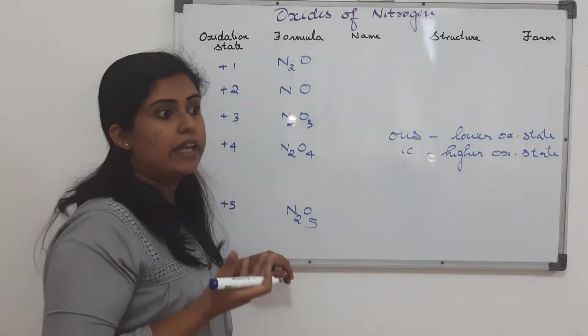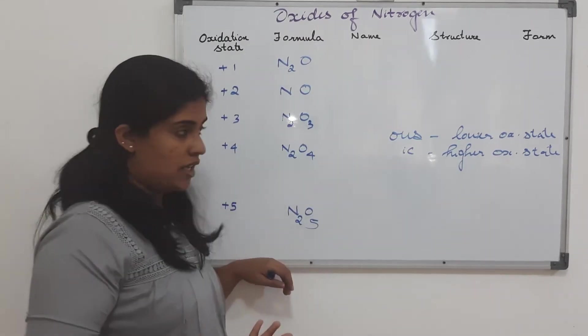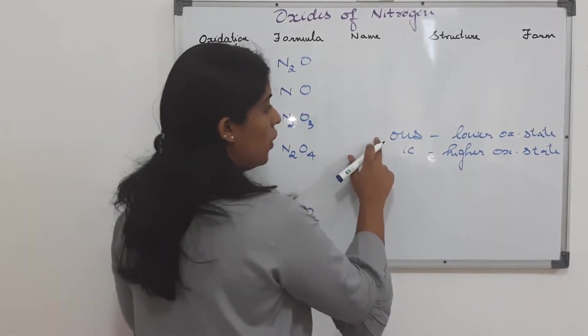Whereas, a name that ends with IC corresponds to a higher oxidation state. So, we have like sulfurous, sulfuric, nitrous, nitric, and all.